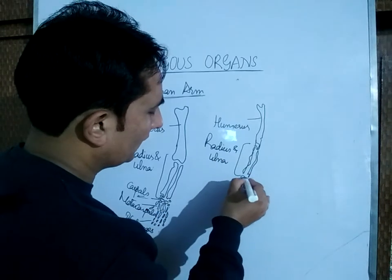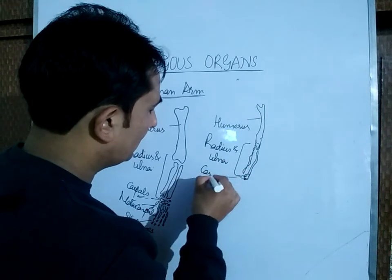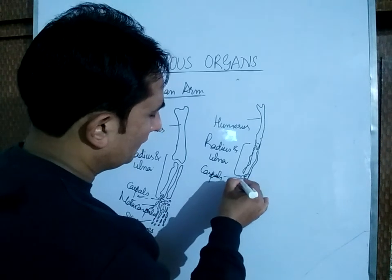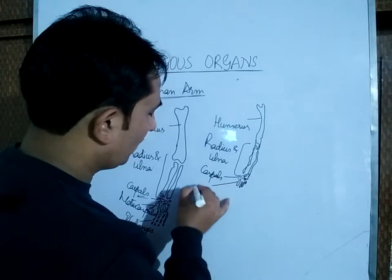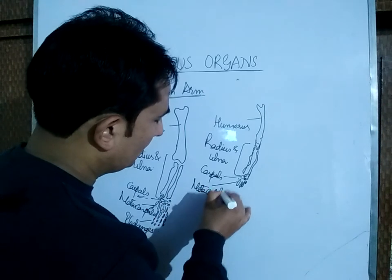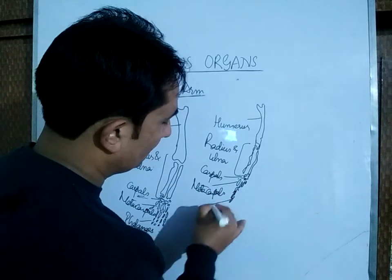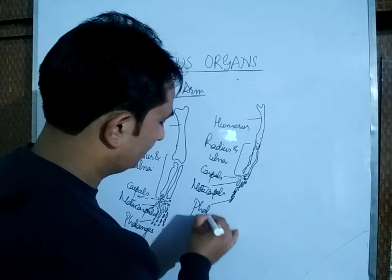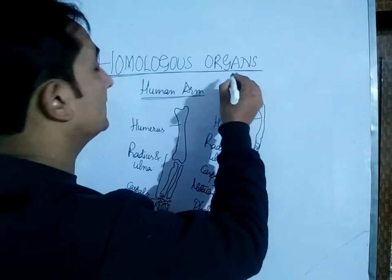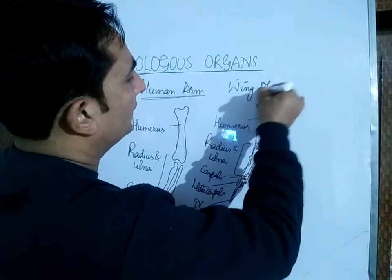Then there are carpals, then there are metacarpals, and lastly there are phalanges. This is the wing of the bird.